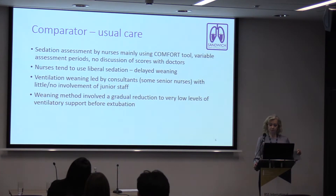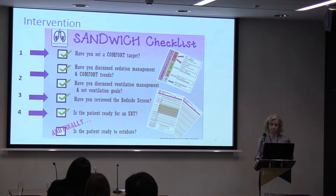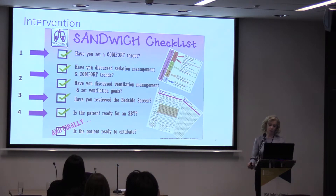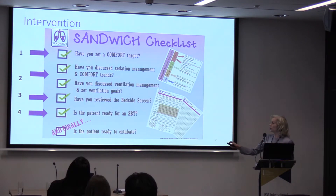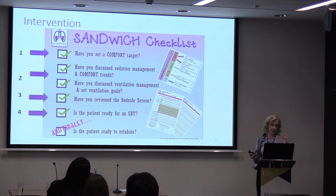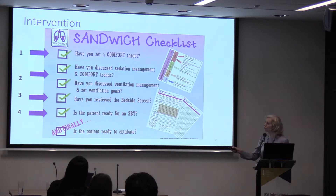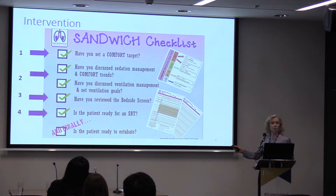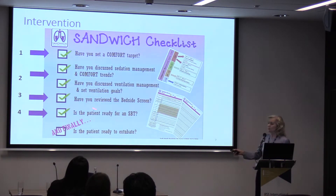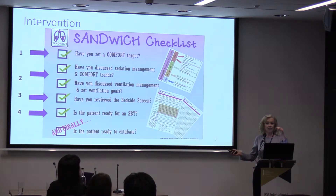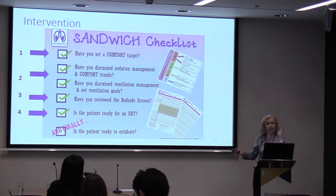The weaning method involves gradual reduction of ventilator support right down to a particularly low level before extubation — before taking the tube out. The intervention differs in four key components. First, nurses must assess comfort a minimum of every six hours during the day. The second component is the multidisciplinary ward round, where doctors and nurses are together to discuss sedation management, drug choices, and the plan for getting the child off the ventilator. This is communicated to the bedside nurse.